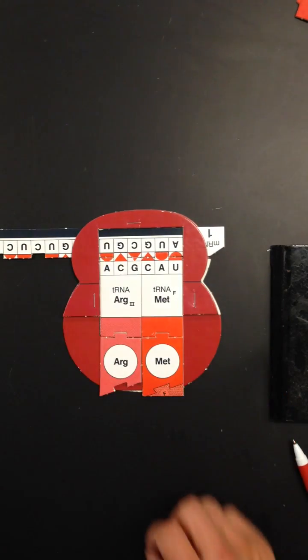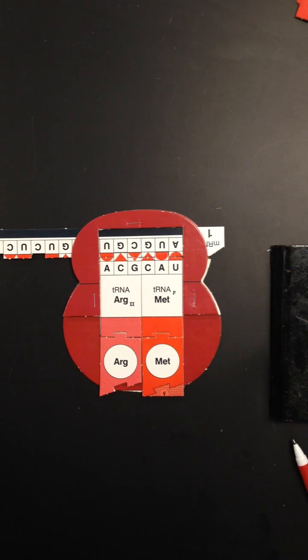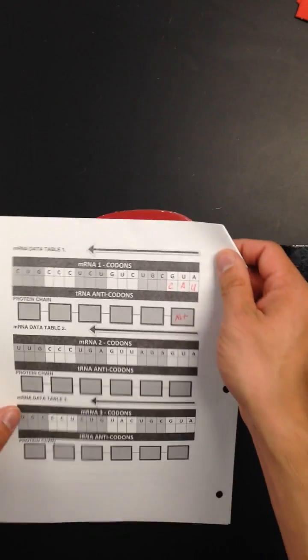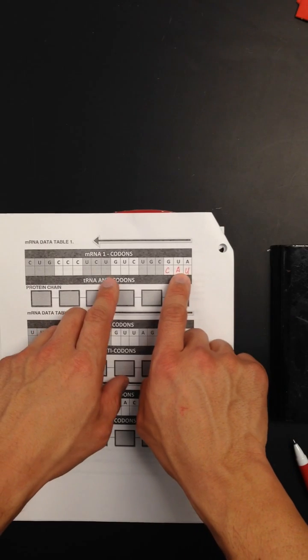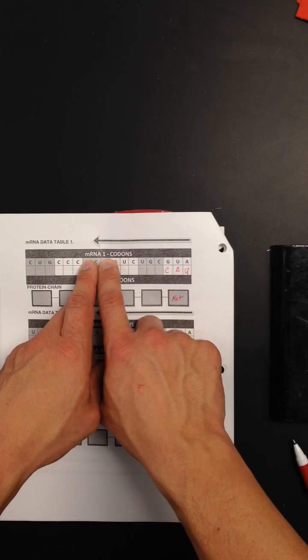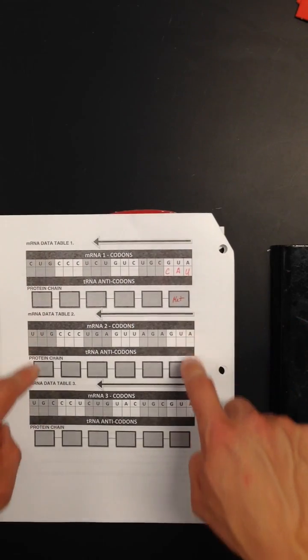Once you do that, don't forget you have a data table that you need to fill out in your lab. Once you put the transfer RNAs into your ribosome, you're going to want to flip on over to the second page of your lab and fill in the code for the matching RNA strand. You have four sections that you need to fill in: mRNA1, mRNA2, mRNA3, and then mRNA4.